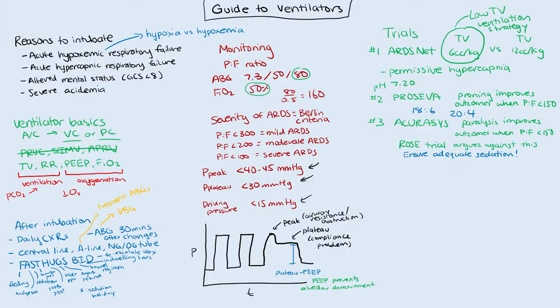For weaning, our goal PaO2 is 55 to 80. If the patient's oxygenation is improving, start decreasing their oxygen. First, come down on FiO2 to less than 60%, because above 60% you risk oxygen free radical toxicity and lung injury. After getting FiO2 below 60%, start titrating PEEP down. Throughout this process, perform daily spontaneous breathing trials and daily sedation holidays.